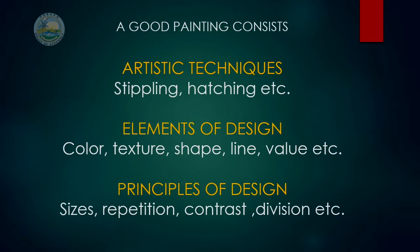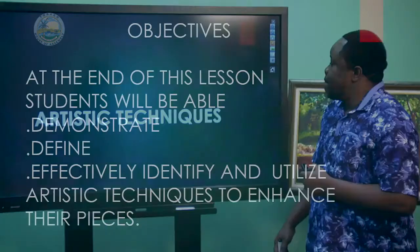The artistic technique involves stippling, hatching, etc. Additionally, you must have elements of design, which include color, texture, shape, line, value, etc. And thirdly, you must have some principles of design as well — sizes, repetition, contrast, division. Those are aspects of principles of design. So over the next few weeks, we will be focusing on artistic techniques, elements of design, and principles of design.